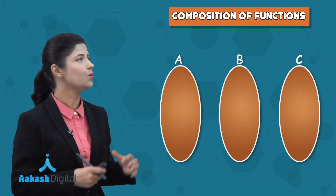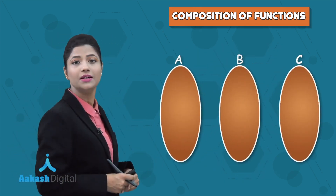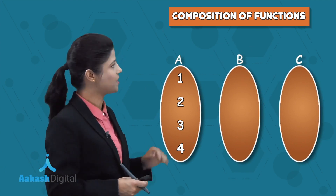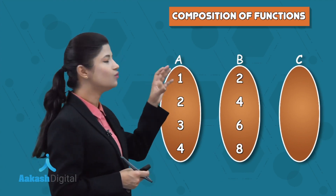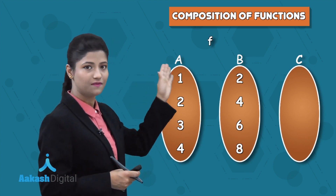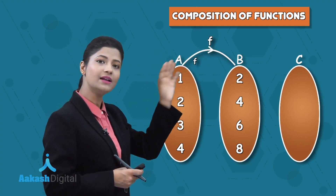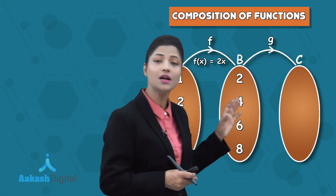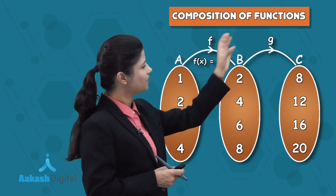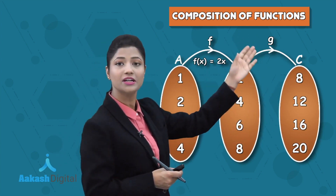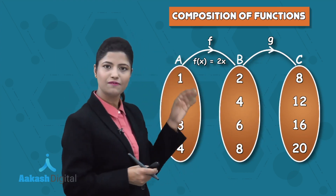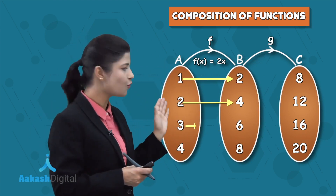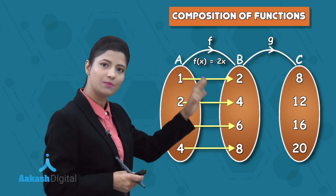Elements D, E, F act as the domain for function G, where the image of D is P, of E is Q, and of F is R. There could be a function that directly yields P from A, Q from B, or R from C — that is called the composition G of F, written as G∘F(x), defined from set A to C, where the domain is A and the co-domain is set C. Now let's see how it works with a numerical example. I have set A with elements 1, 2, 3, 4 and set B with elements 2, 4, 6, 8. Function F is defined from set A to B where F(x) = 2x. According to this function, 1 maps to 2, 2 maps to 4, 3 maps to 6, and 4 maps to 8.